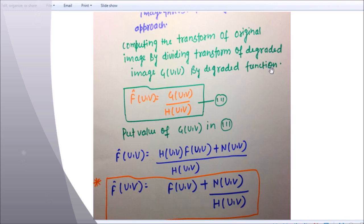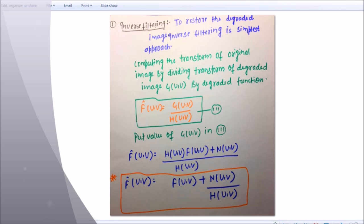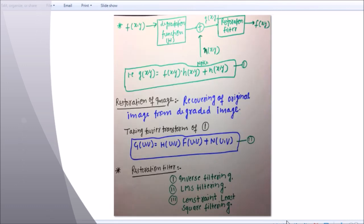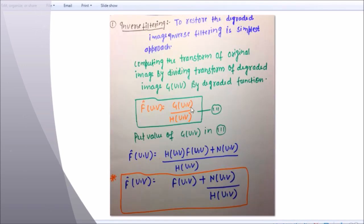Now we know the value of G(u,v) from the third equation. Now this value you have to substitute in the second equation. After substituting you will get F cap (u,v) equals H(u,v) F(u,v) plus N(u,v) divided by H(u,v). After solving this you will get F(u,v). So this is your restored image with the help of inverse filtering.